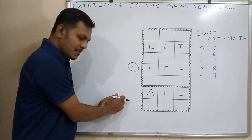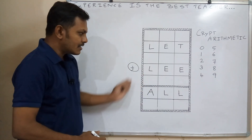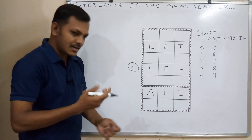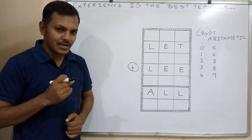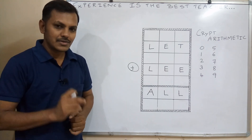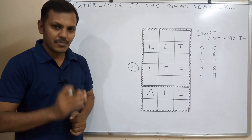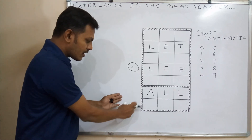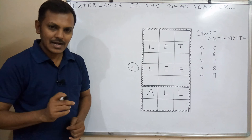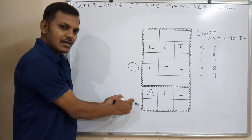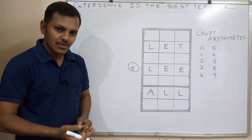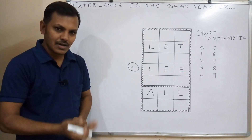We will write number 1 and then start. In problems like CENT plus MORE equals MONEY, or ZERO plus POINT equals ENERGY, we get one more column, so we start from 1. But in this problem we cannot start from 1 — it may be 0, 1, 2, 3, 4, 5, 6, or some other number.